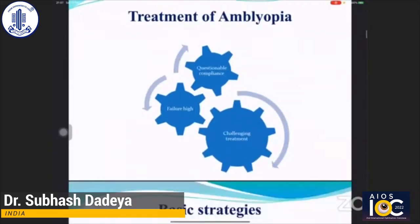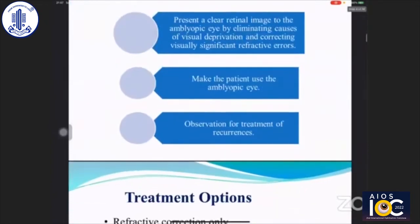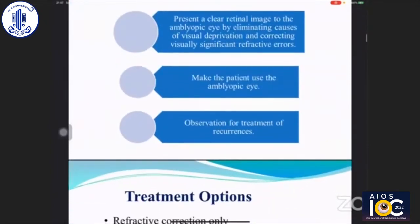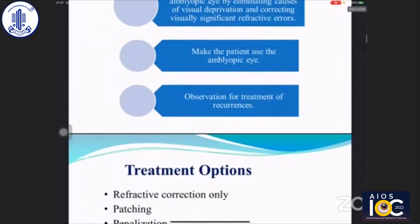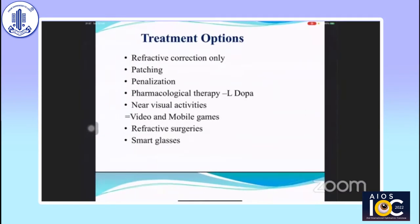Treatment of amblyopia has questionable compliance, a high failure rate, and is challenging. Basic strategies are: present a clear retinal image to the amblyopic eye by eliminating the cause of visual deprivation, correcting visually significant refractive errors, make use of the amblyopic eye, and observe for recurrences. Various treatment modalities include: refractive correction only, patching, penalization, pharmacological therapy, near visual activities, video games, mobile games, refractive surgeries, and smart glasses.